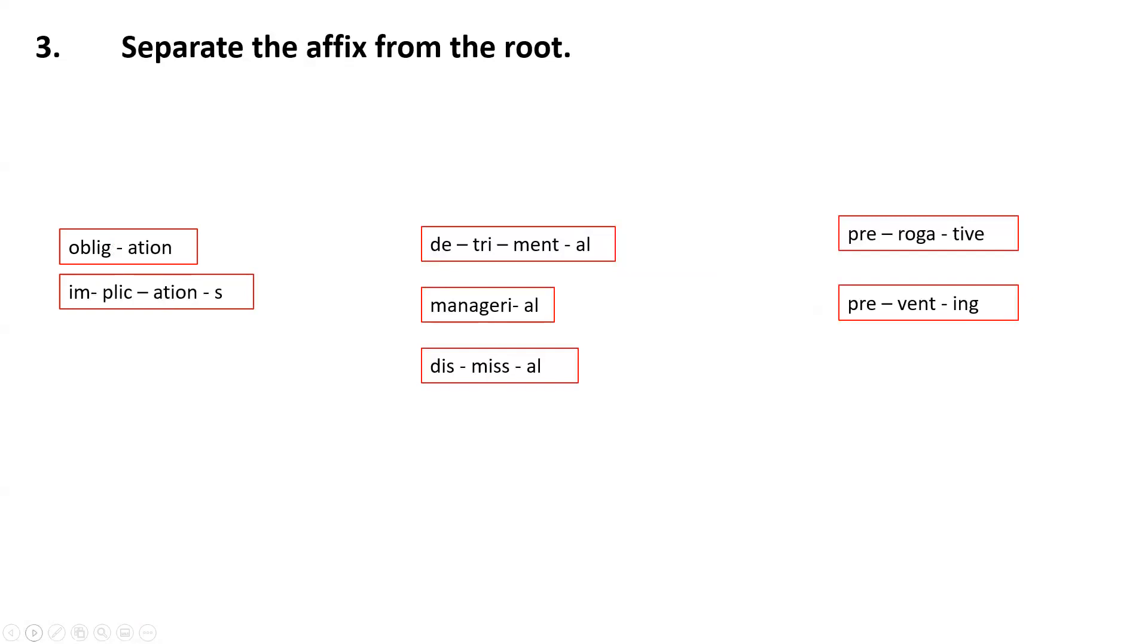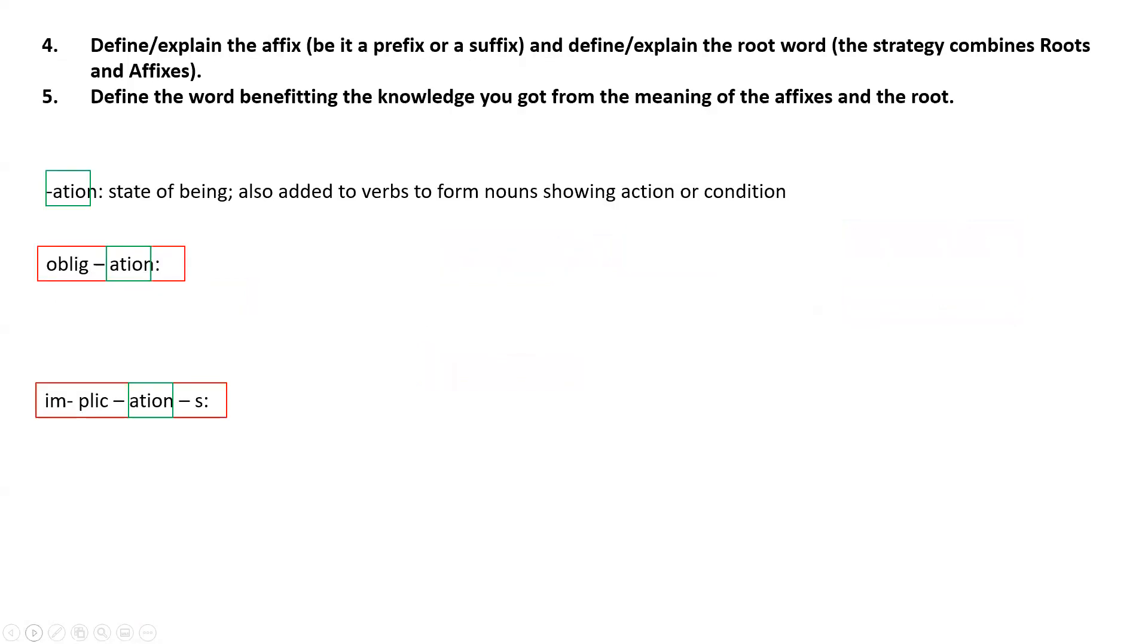Next goes stage number four and five. So I start by defining and explaining the affixes first—something that combines all those words—and then I need to look at the root of the word, what it actually means. If there are any other affixes, I also need to find out what their meaning is.